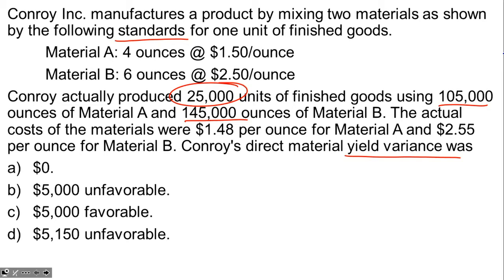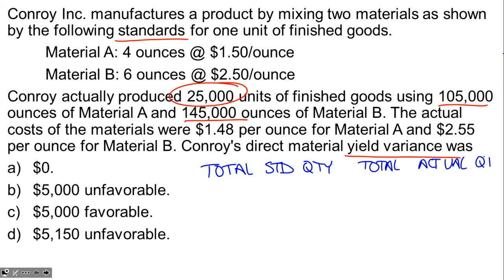The yield variance is part of the quantity variance. The quantity variance breaks down into the yield variance and what we're looking at here is the total quantity — what part of that quantity variance is caused by the fact that the total quantity of inputs was different than it should have been. So we're looking at the total standard quantity and the total actual quantity.